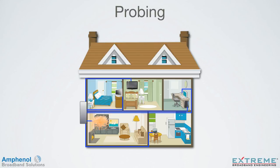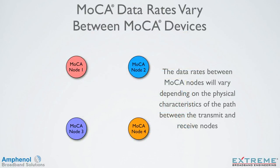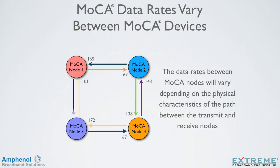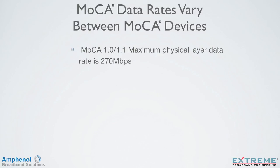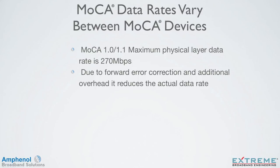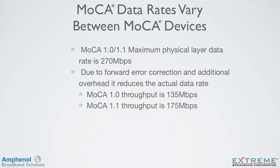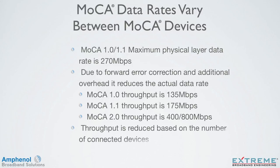For example, if you wanted to watch something in the bedroom that was recorded on the multi-room DVR in the living room, the MOCA device will probe the signal path for micro-reflections, high attenuation, etc. The data rates between MOCA nodes will vary depending on the physical characteristics of the path between the transmit and receive nodes. With MOCA 1.0 and 1.1, the maximum physical layer data rate is 270 megabits per second. Due to forward error correction and additional overhead, it reduces the actual data rate — MOCA 1.0 has a throughput of 135 Mbps, 1.1 has 175 Mbps, and 2.0 has 400 to 800 Mbps throughput. Since all devices share one channel, throughput is reduced based on the number of connected devices.